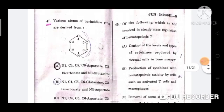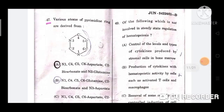Question number 47: Various atoms of pyrimidine ring are derived from? The correct answer is option A, N1, C4, C5, C6 aspartate, C2 bicarbonate and N3 glutamine.